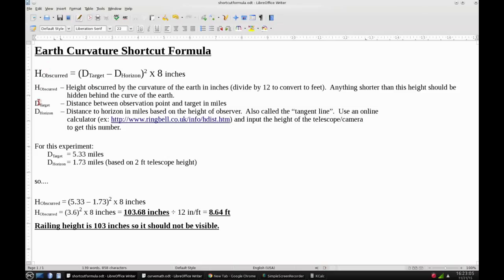I'll just describe these terms real quick. Height obscured is the height obscured by the curvature of the earth in inches. If you divide by 12 you can convert it to feet. Anything shorter than this height should be hidden behind the curve of the earth.